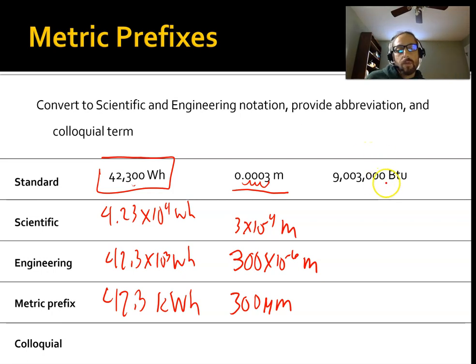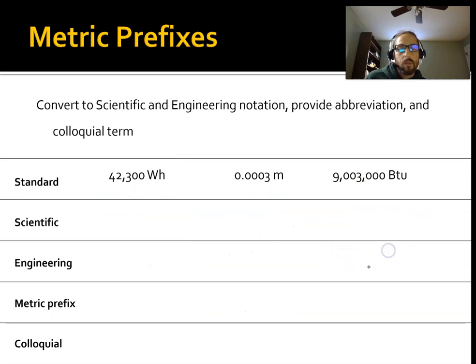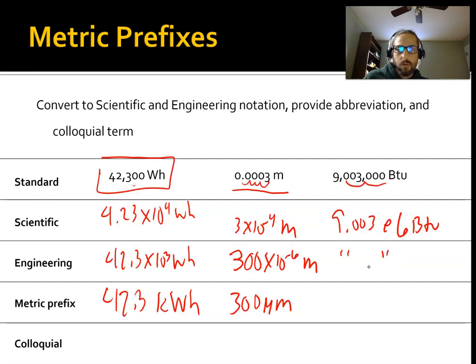So, and then the last one here is 9.003 times 10 to the, what do we got, 6, BTU. That's the same in engineering. So, because it's already in a multiple 6, or multiple 3, excuse me. And then remember, in the energy field, that's an MMBTU. So that's going to be 9.003 MMBTU. And then colloquial would be 9.003 million BTUs, or MMBTU is pretty common.